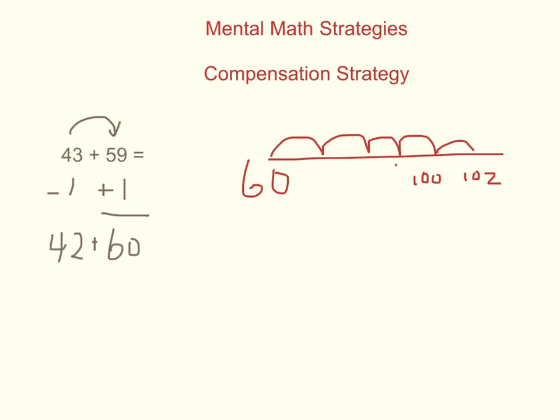Or we can use the front end strategy where we add our tens digits and our ones digits separately. Starting with our friendly number of 60, breaking apart 42 in its expanded form, we have 60 plus 40 equals 100, and adding the 2, 100 plus 2 equals 102. Therefore, the answer to the question 43 plus 59 or the answer to the question 42 plus 60 is 102.